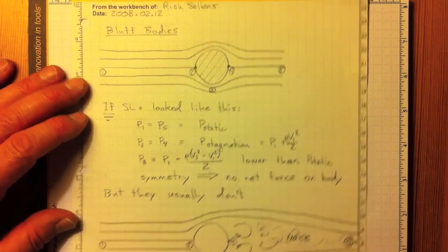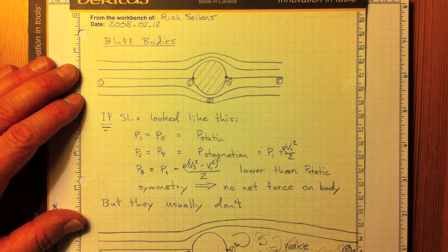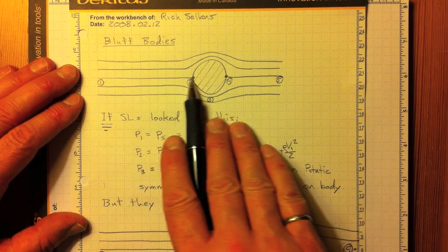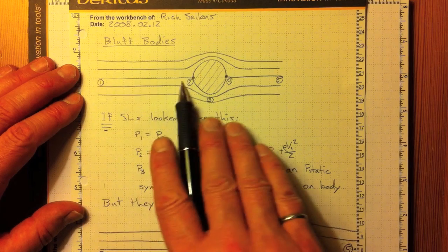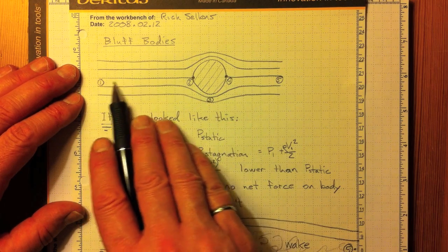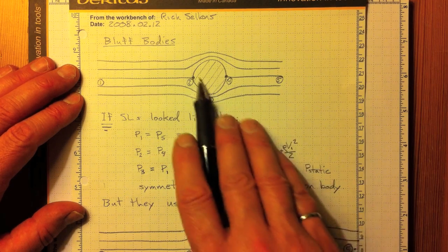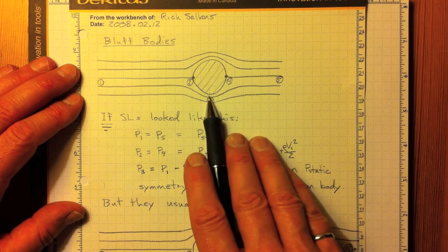And finally, we can extend this idea with the Bernoulli equation to any bluff bodies we're dealing with. Streamline going from 1 on the center line hitting a stagnation point at 2, the pressure at 2 will be much higher. The fluid accelerates around the bluff body, the thing that's in the way,